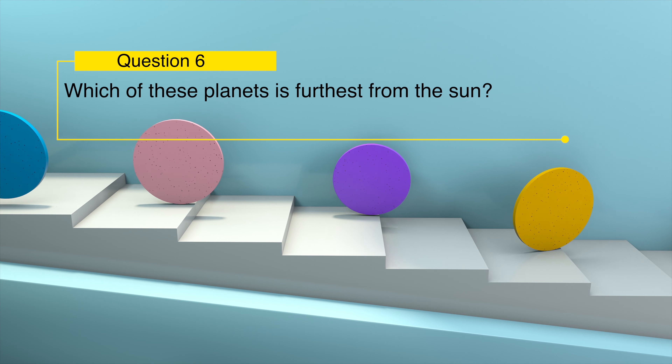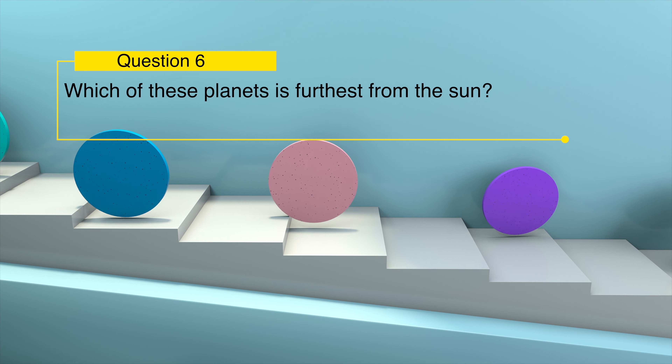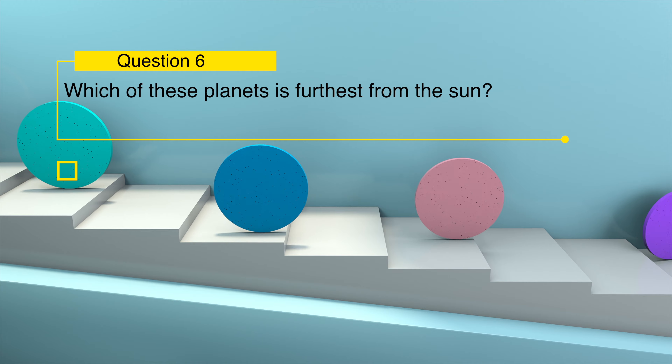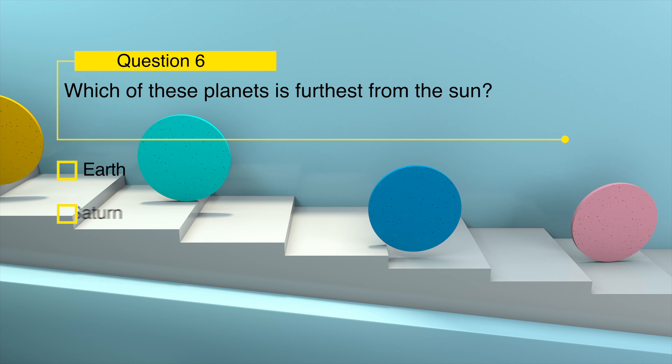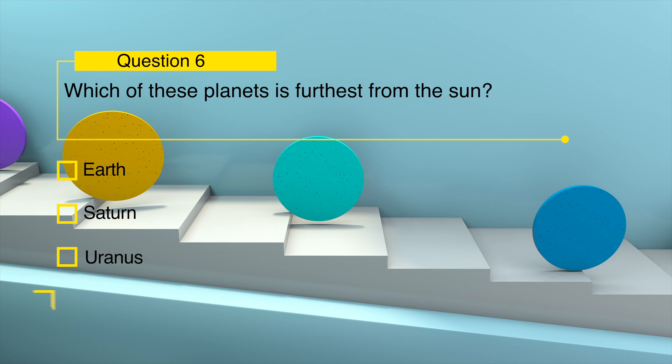Which of these planets is furthest from the sun? Earth, Saturn, Uranus, or Neptune?